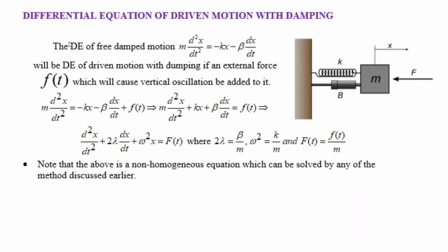In this video we will discuss mathematical modeling of differential equations with driving motion with damping. The differential equation of free damped motion is m d²x/dt² = -kx - β(dx/dt), where β is the damping force and there is no external force. When there is an external force f(t), the equation becomes m d²x/dt² = -kx - β(dx/dt) + f(t), making it a non-homogeneous equation, which we solve using undetermined coefficients or variation of parameters methods.